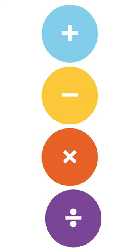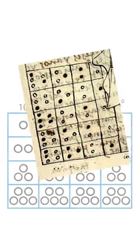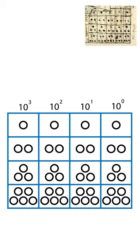The Incas used Yupanas to perform addition, subtraction, multiplication, and division. These had five columns and four rows. The columns represented thousands, hundreds, tens, and single digits.